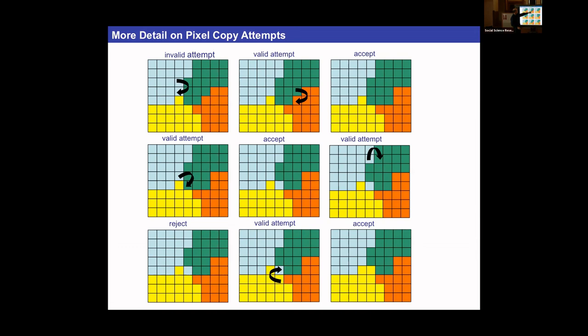There are several algorithms in CompuCell: one blindly picks two pixels; another keeps track of boundaries. We're picking a green cell as source and a neighboring orange cell as destination. We calculate energy for the current configuration, then calculate energy assuming the overwrite, take delta = after minus before, and if it's less than zero, accept it. The green cell gains one pixel and the orange cell shrinks.